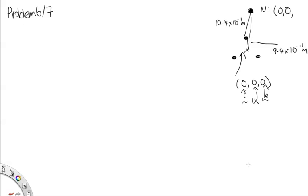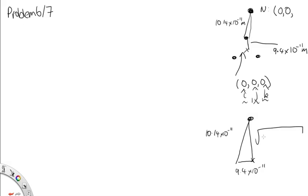The center of mass of the three hydrogen atoms is at location 0, 0, 0. The nitrogen atom is directly above this center of mass, so in the i and j plane it's at 0, 0. We use Pythagoras' theorem to find the height of the nitrogen above the center of mass: sqrt(10.14² minus 9.4²) times 10⁻¹¹ = 3.80 × 10⁻¹¹ meters.